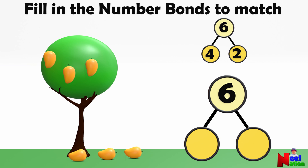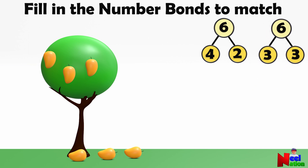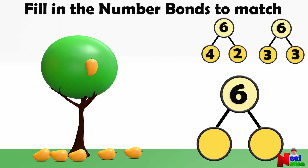How many mangoes are on the ground? Three — right! And how many are on the tree? Three. So six can also be decomposed into three and three. Look again — more mangoes fell off the tree! Now how many mangoes are on the ground? Five. And how many are on the tree? One. So six can also be decomposed into five and one. Here we found three different ways to decompose six!